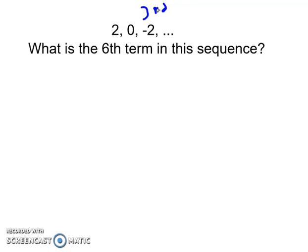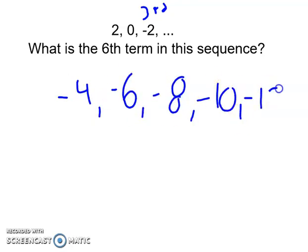Alright, so if you kept on going with the pattern, we'd have negative 4, negative 6, negative 8, and we can keep on going. But it says, what's the 6th term? Well, if negative 2 is the 3rd, negative 4 is the 4th, negative 6 is the 5th, negative 8 is going to be the 6th term in this sequence, or in this pattern. So the answer would simply just be negative 8. And we find that by just simply subtracting 2 every single time.